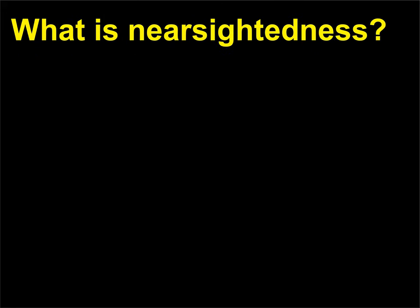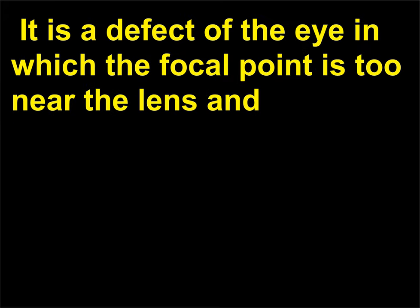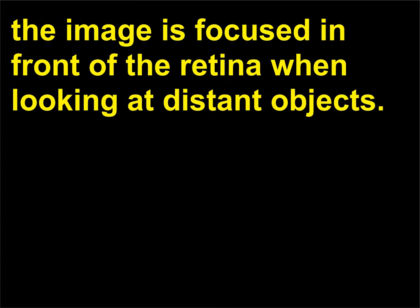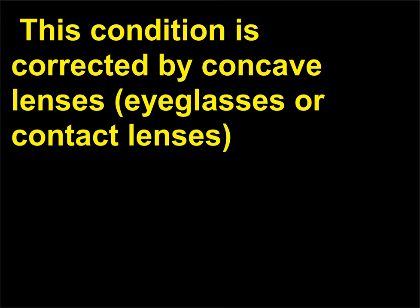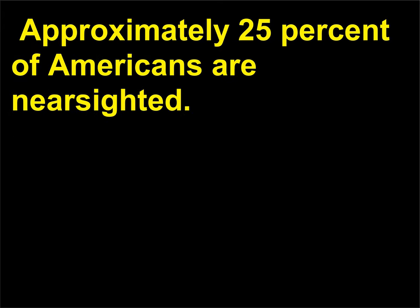What is nearsightedness? Nearsightedness, or myopia, is the ability to see close objects but not distant ones. It is a defect of the eye in which the focal point is too near the lens, and the image is focused in front of the retina when looking at distant objects. This condition is corrected by concave lenses — eyeglasses or contact lenses — that diffuse the light rays coming to the eyes so that when the light is focused by the eyes it reaches the proper spot on the retinas. Approximately 25% of Americans are nearsighted.